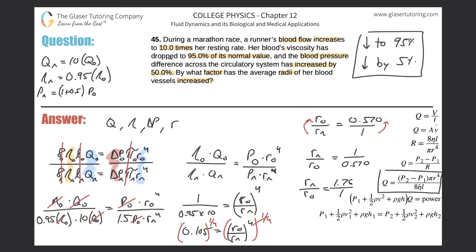Plugging 1 divided by 0.570 into the calculator gives approximately 1.76. So r_new over r_old equals 1.76, meaning the new radius is about 1.76 times larger than the original. This is the factor by which the average radii have increased. In equation form: r_new equals 1.76 times r_old. If you wanted to express this as a percent, it would be a 76 percent increase, but in terms of a factor the answer is 1.76.